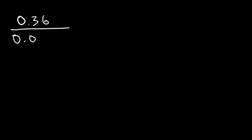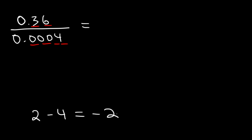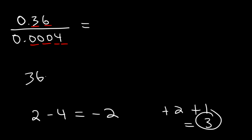Let's try another example. Let's divide 0.36 by 0.0004. There are two digits on top and a total of 4 on the bottom. 2 minus 4 is a negative number. If you get 0 or a negative number, treat the absolute value as positive and then add 1 — so the absolute value of negative 2 is 2, plus 1 gives us 3. This tells us we should have three digits to the left of the decimal point. Now, 36 divided by 4 is equal to 9, so we write 9 with two zeros to get three digits: 900. So 0.36 divided by 0.0004 is 900.